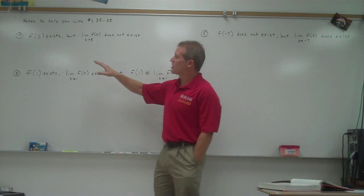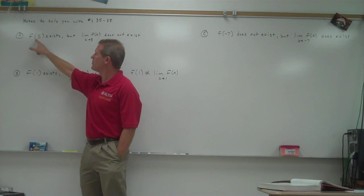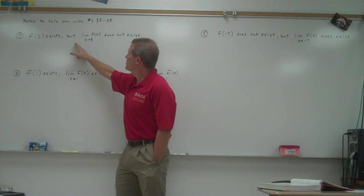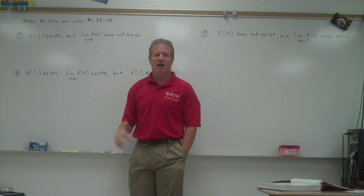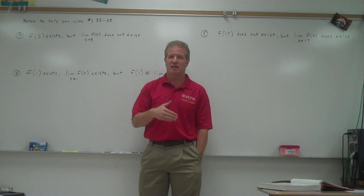So for A, we're going to sketch a graph where f of 5 exists, but the two-sided limit of f of x as x approaches 5 does not exist. So how could f of 5 exist but the limit not exist?